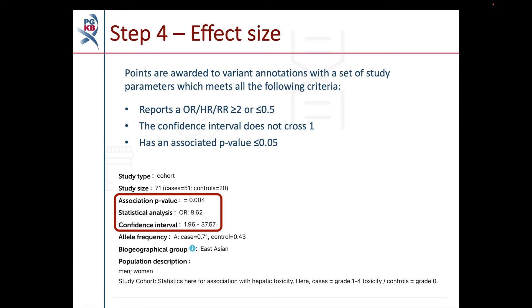Step 4 assesses any effect sizes reported by the study. If the study parameters report an odds ratio, hazard ratio, or relative risk of 2 or more or 0.5 or less, and the confidence interval does not cross 1, and there is an associated p-value of 0.05 or lower, then points are awarded.